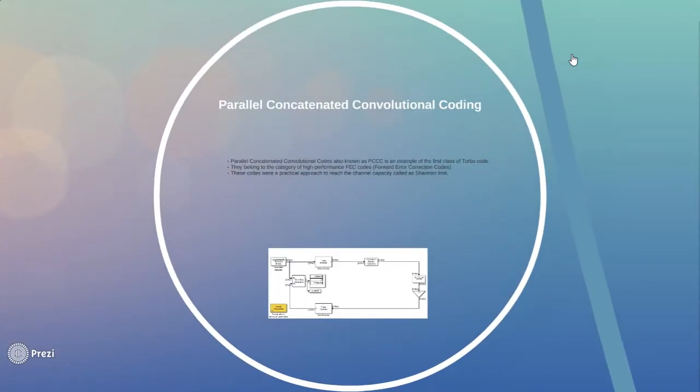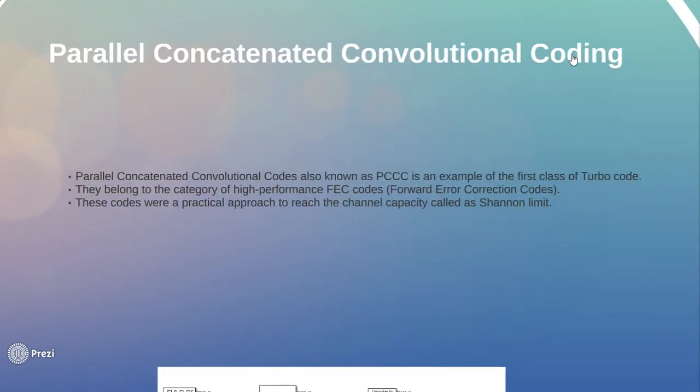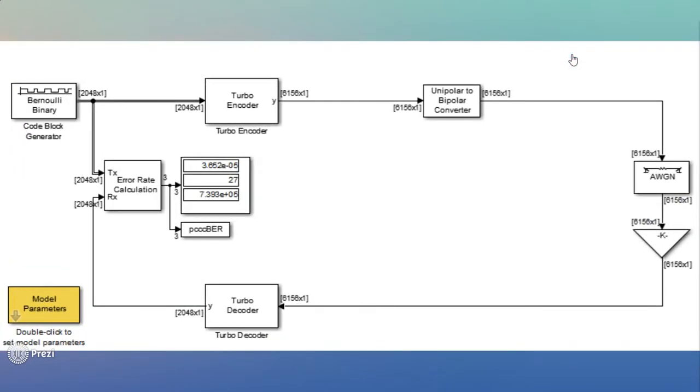Now moving on to turbo codes or parallel concatenated convolution coding. They are an example of first class turbo codes. They belong to the category of high performance FEC or forward error correction codes. These codes were a practical approach to reach the channel capacity also called the Shannon limit.